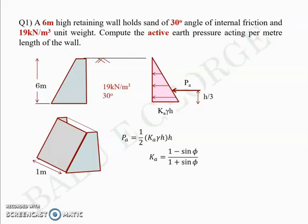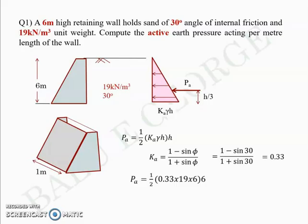With phi = 30 degrees, Ka equals 1/3 or 0.33. Substituting into the equation, Pa turns out to be approximately 112.86 kN per meter run, meaning for every one meter length of the retaining wall there will be a 112.86 kN force acting.